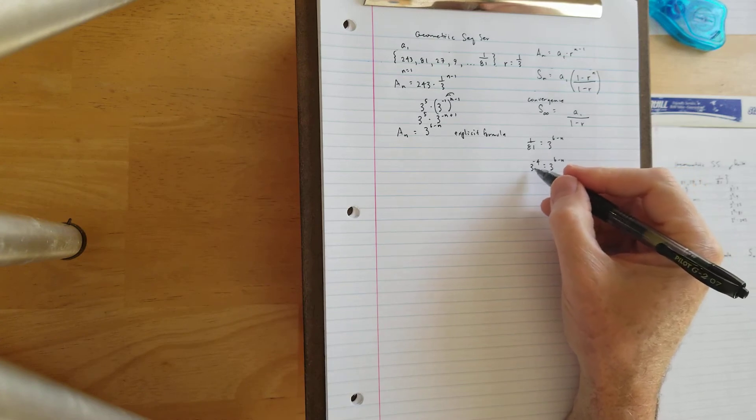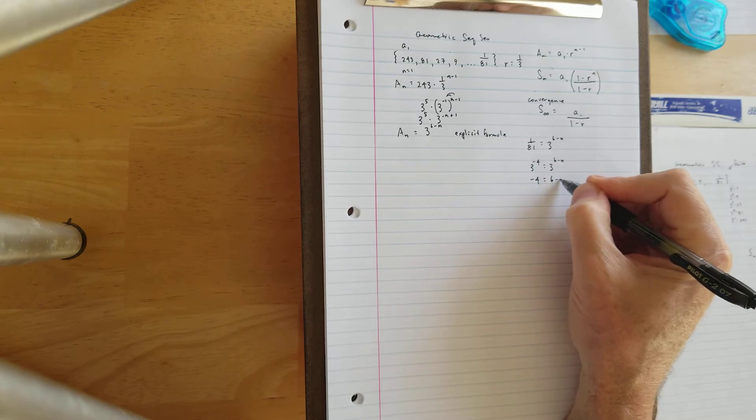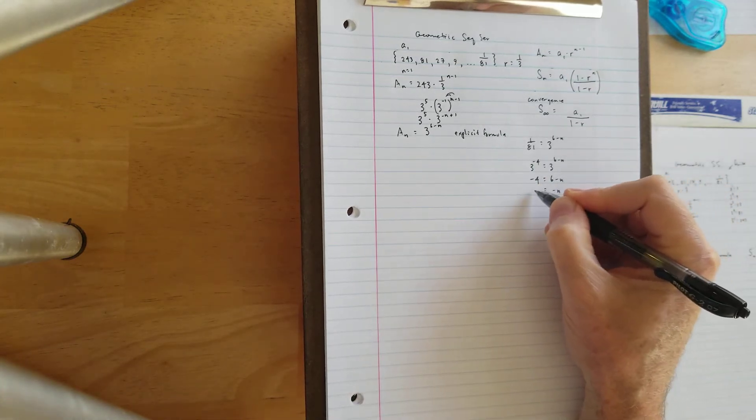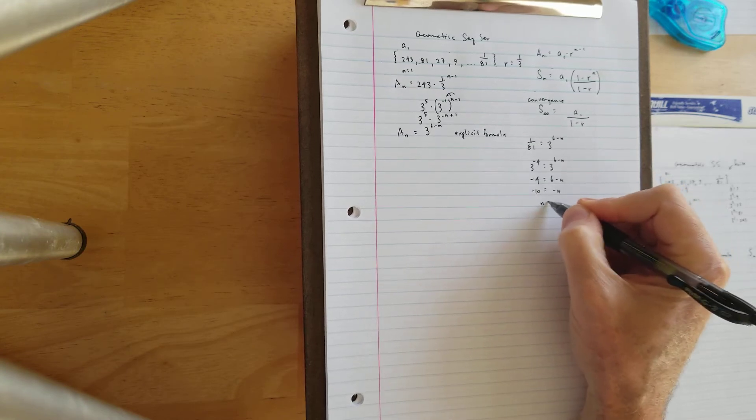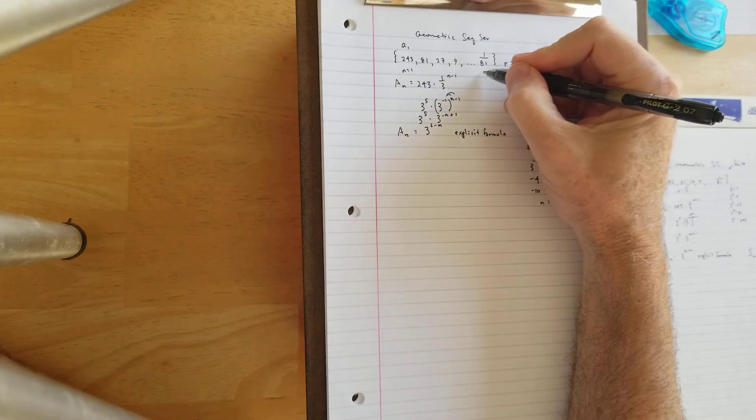If the bases are the same, I can set the exponents equal to each other. And that's going to give me negative n equals negative 10 or n equals 10. So I know that 1 over 81 is the 10th term of the sequence.